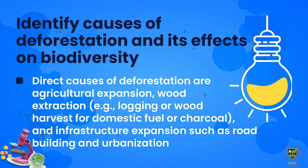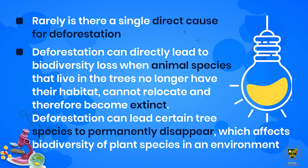Rarely is there a single direct cause for deforestation. Deforestation can directly lead to biodiversity loss when animal species that live in trees no longer have their habitats, cannot relocate, and therefore become extinct. Deforestation can also lead certain tree species to permanently disappear, which affects the biodiversity of plant species in an environment.